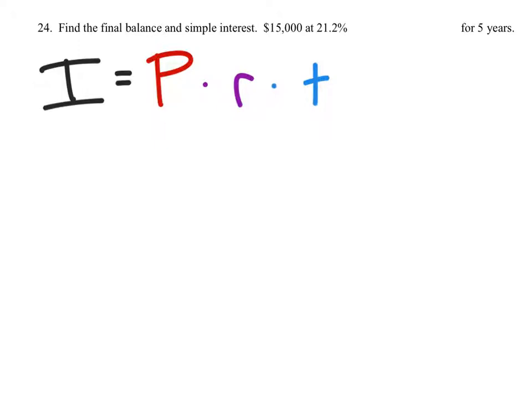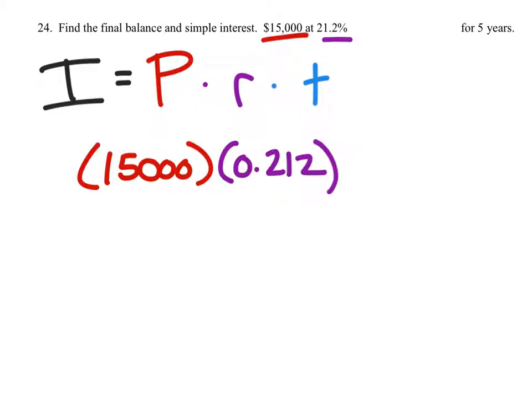And the simple interest is principal times the rate times the time. We can see up here that the principal is $15,000 and the rate is 21.2%, and we'll multiply that in its decimal form 0.212, and this is going to happen for five years, which is our time.